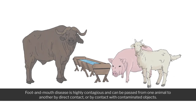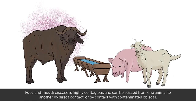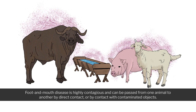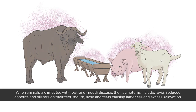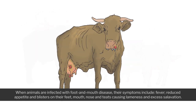Foot and mouth disease is highly contagious and can be passed from one animal to another by direct contact or by contact with contaminated objects. When animals are infected with foot and mouth disease, their symptoms include fever, reduced appetite and blisters on their feet, mouth, nose and teats, causing lameness and excess salivation.